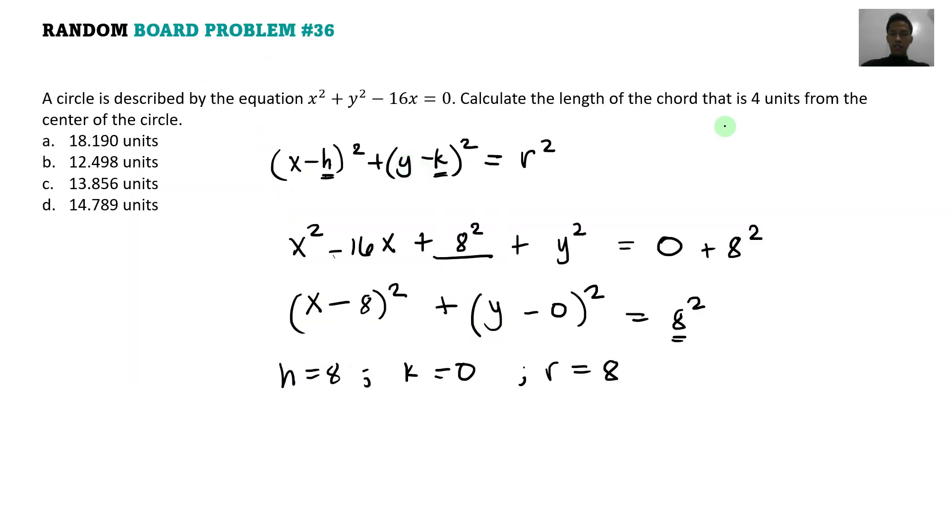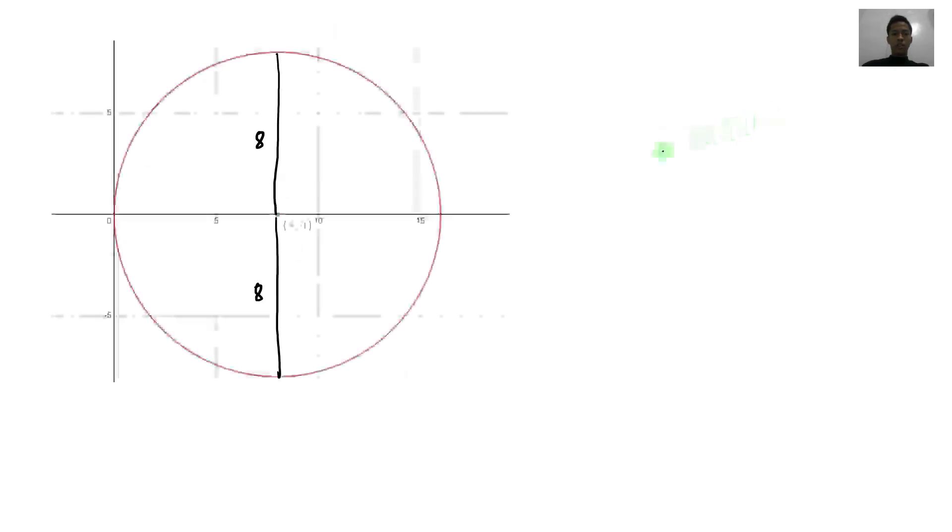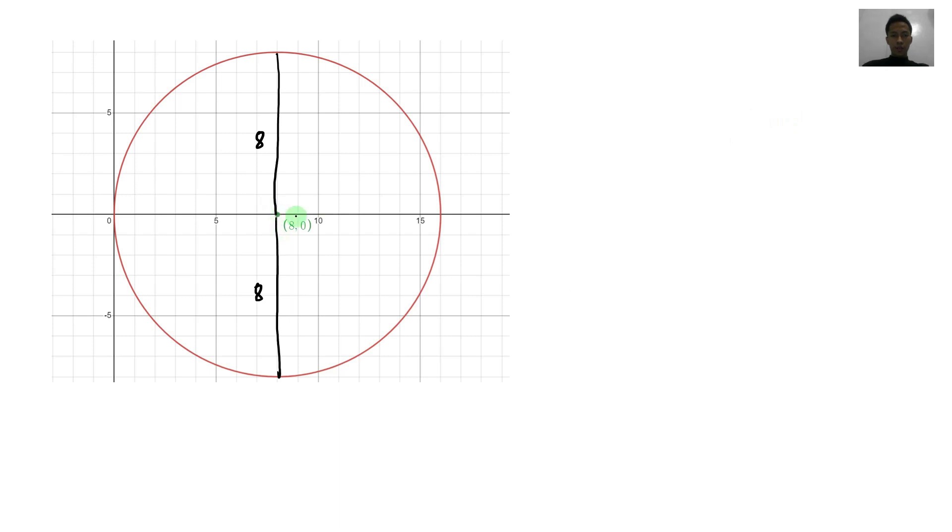And then, ang question natin is that the length of the chord, that is 4 units from the center of the circle. So if this is the center, so we have 1, 2, 3, 4, ayan. That's 4 units from the center. So ito na yung chord natin. So we have this chord here. So the definition of a chord is that it is a line segment that connects 2 points on your circumference. So ito ay 4 units here, from here to here.